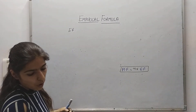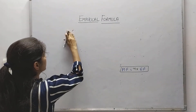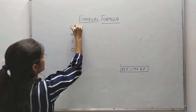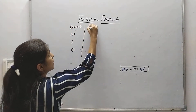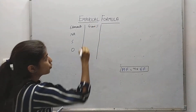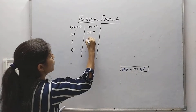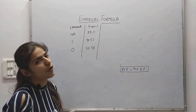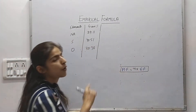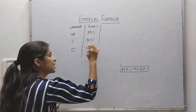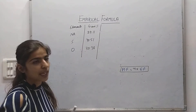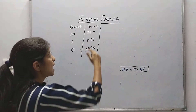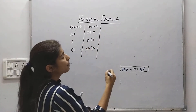An inorganic salt gave the following percentages: sodium, sulfur, and oxygen. The given percentages are: sodium 29.11%, sulfur 40.51%, and oxygen 30.38%. We need to calculate the empirical formula from these percentages. First, check that the total percentage is 100 — and it is already 100 here.